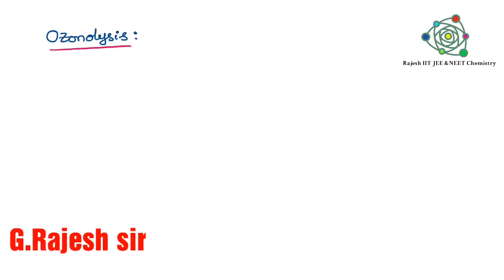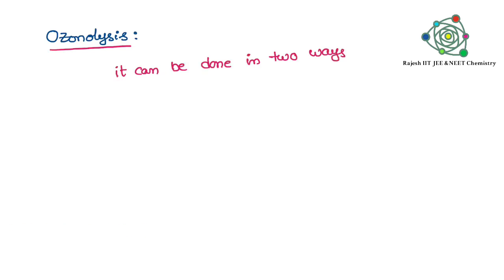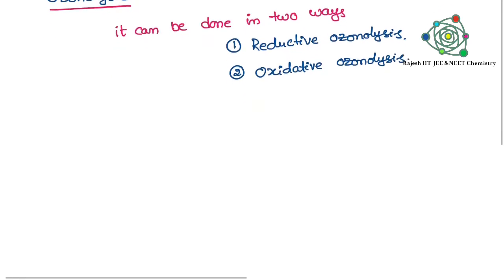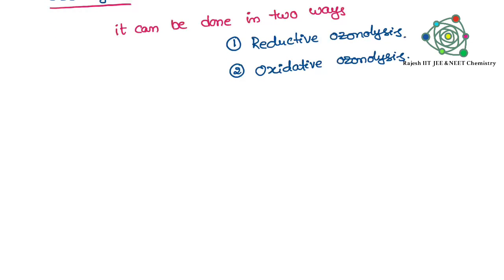Hello students, welcome to today's class. In today's class we are going to learn about the Ozonolysis concept in detail. Ozonolysis can be classified into two types: one is reductive Ozonolysis and another one is oxidative Ozonolysis.